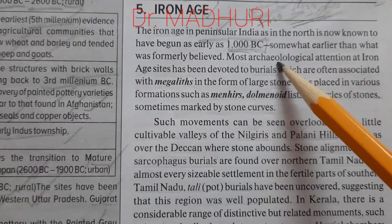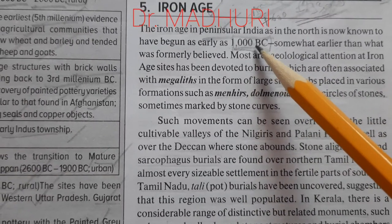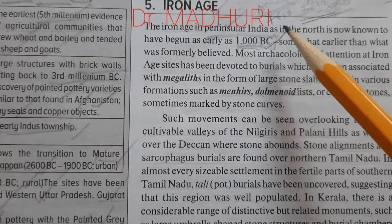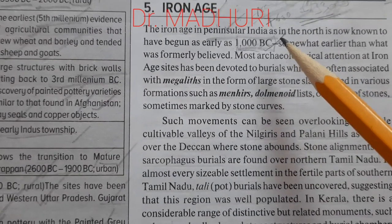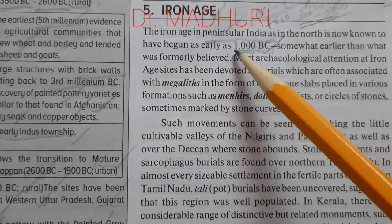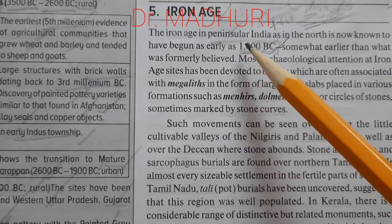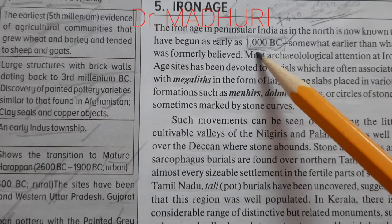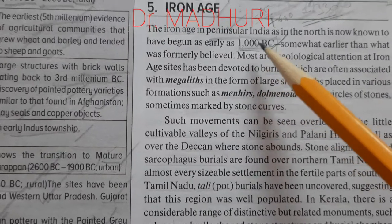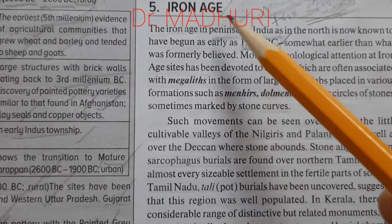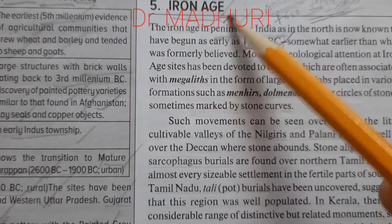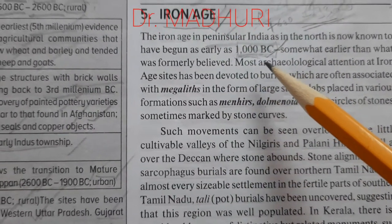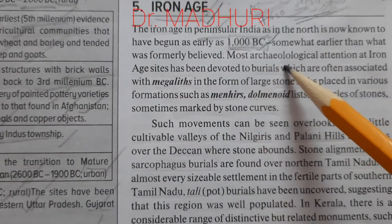This is somewhat earlier to what was formally spoken about North India. In Harappan civilization, the Iron Age began much later than 1000 BC. So Iron Age first began in South India and then extended to North India. That is what we must know.